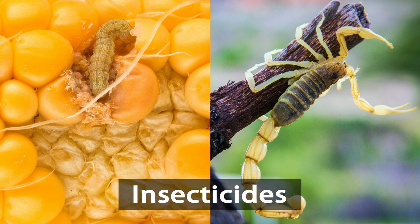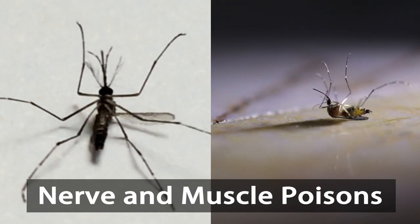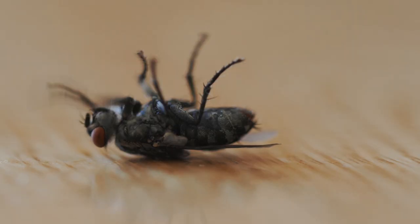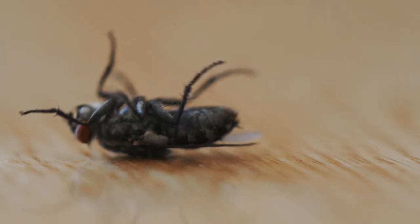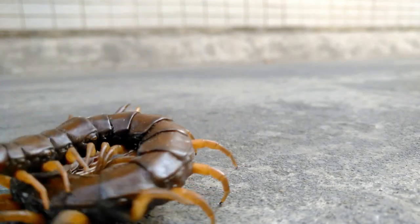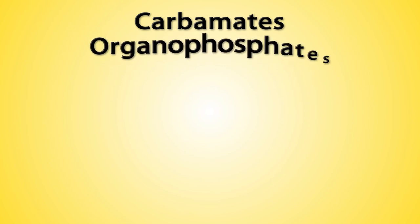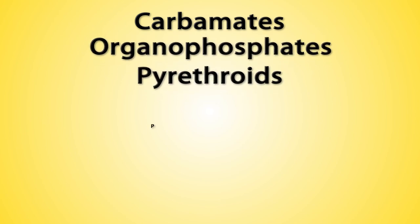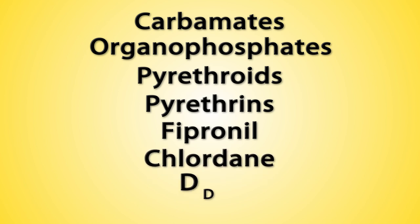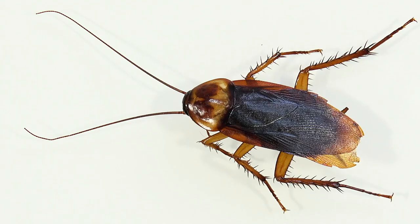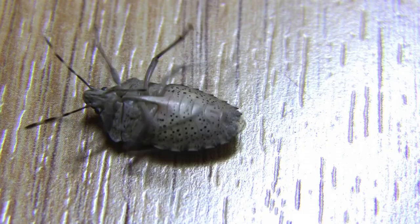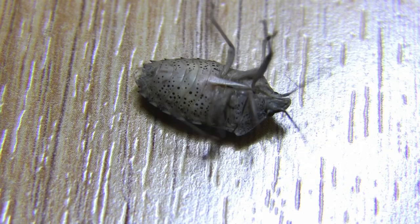Insecticides control insects and other arthropods. Nerve and muscle poisons in insecticides disrupt, inhibit, block, terminate, or activate various channels, enzymes, and receptors within pests. Examples include carbamates, organophosphates, pyrethroids, pyrethrins, fipronil, chlordane, DDT, and neonicotinoids. This results in a range of symptoms such as paralysis, hyperexcitation, system shutdowns, and overly stimulated muscle contraction.